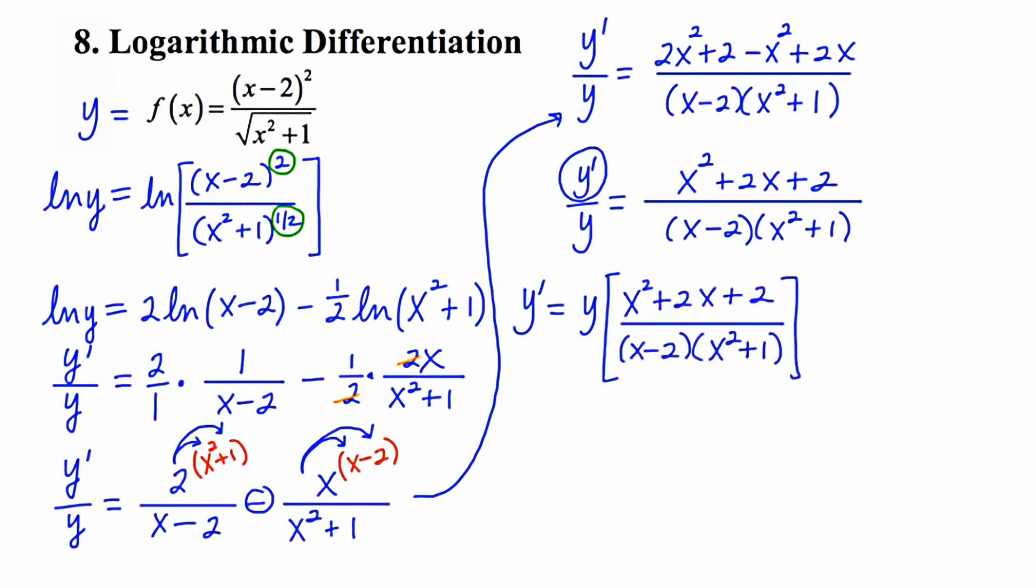Now, if possible, we don't want to have a y in our actual derivative. So it just so happens that this y right here, which is just looming about in our derivative, is defined for us right here in the very beginning of the problem. So I'm going to go ahead and substitute that in. Now, it just so happens that we've got some common factors on the top and bottom. We've got one x minus 2 down here and we've got two of them up here. And then we've got an x squared plus 1 to the 1 half and an x squared plus 1 to the 1 there.